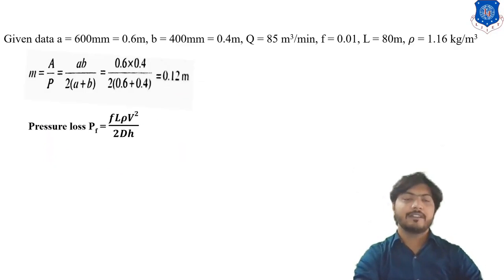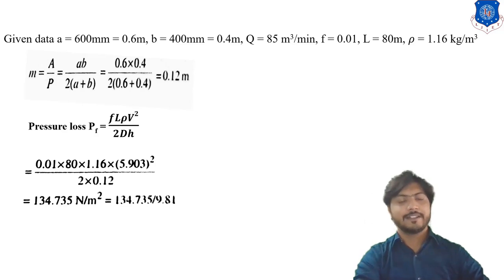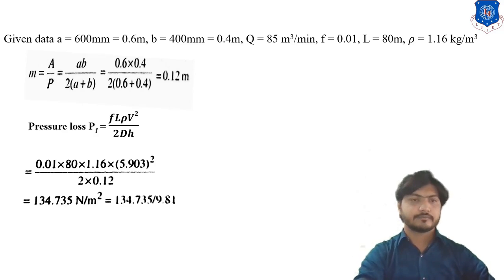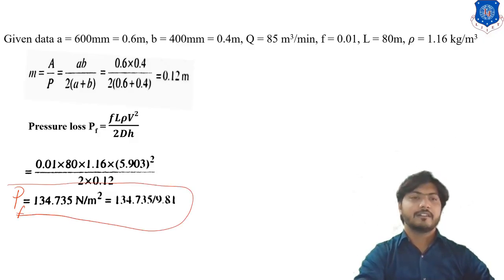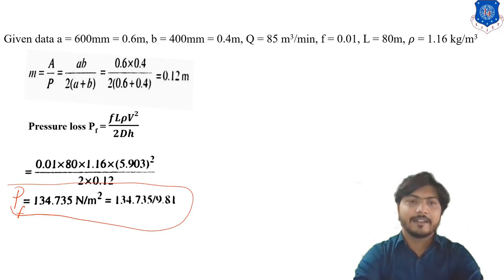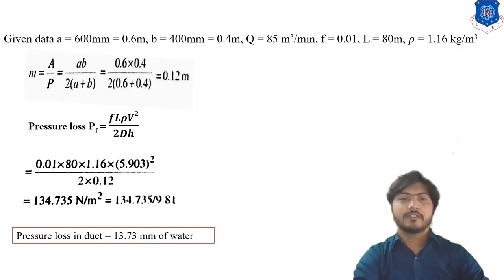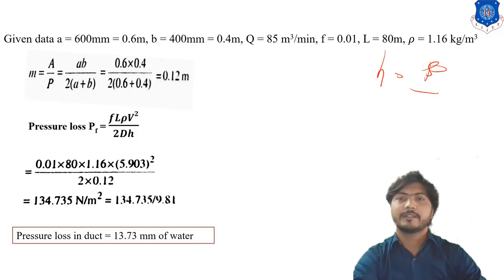Putting all values in the pressure formula, the pressure loss due to friction = 134.735 N/m². Converting to head using H = P / (ρg), we calculate the pressure loss in terms of head. We know that H = P / (ρg) from fluid mechanics. Putting in pressure, density ρ = 1.16 kg/m³, and g = 9.8 m/s², we calculate the pressure loss in terms of head of duct.